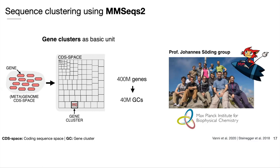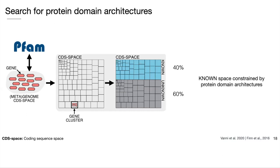Once we had our gene clusters, we filtered out the singletons — clusters with only one member — and proceeded with the first functional partitioning of our gene cluster space. To do that, we searched the predicted genes against the PFAM database to retrieve for each gene a protein domain architecture, which is basically the ordered combination of protein domains on the gene. This annotation allowed us to identify the annotated (~40%) and not annotated (~60%, the majority) gene clusters.